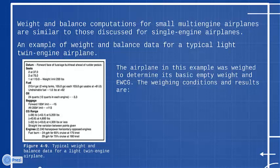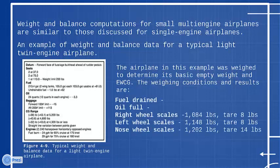The weighing conditions and results are: fuel drained, oil full, right wheel scales 1,084 pounds, tare 8 pounds, left wheel scales 1,148 pounds, tare 8 pounds, nose wheel scales 1,202 pounds, tare 14 pounds.